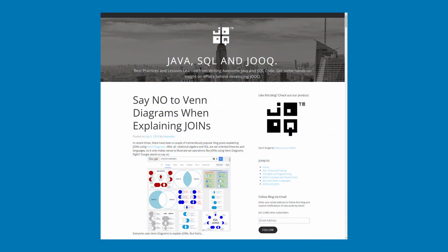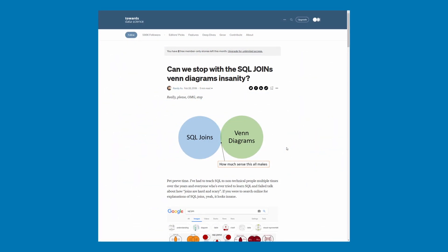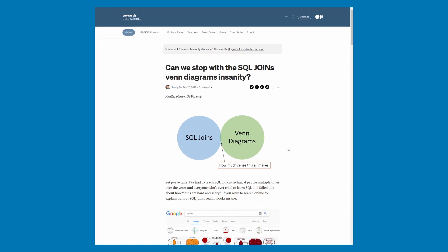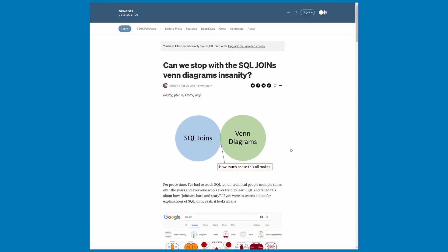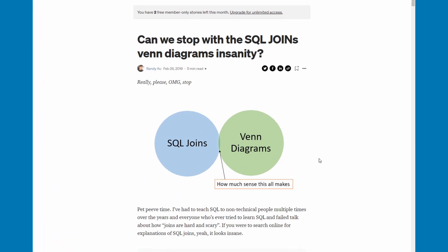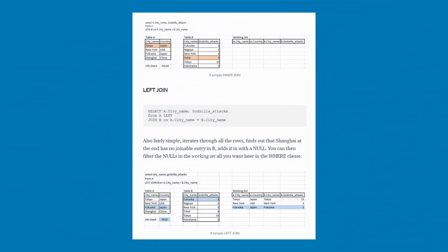For reference, here are two examples from the only two righteous people I could find who also realized just how wrong these Venn diagrams are for representing SQL joins. Over six years ago, Lucas Sater wrote a blog post on the Juke blog titled "Say No to Venn Diagrams When Explaining Joins." He suggests a pretty nice visualization using colors, numbers, and characters — I'll link it in the description. Three years ago, Randy O posted on the Two Words Data Science blog a post titled "Can We Stop with the SQL Joins Venn Diagram Insanity?" He made a hilarious Venn diagram that just nails it, and came up with an animated visualization for joins. I'll link it in the description too.